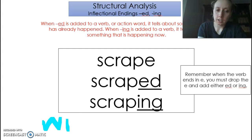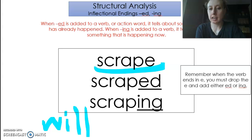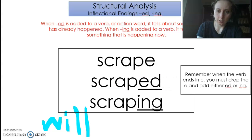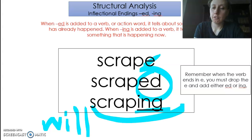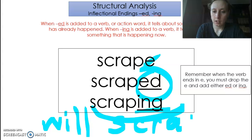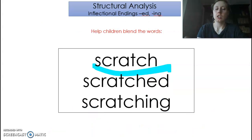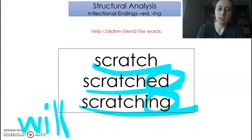Now I'm going to add one more: 'will.' Will means it's happening in the future. So we have 'scrape.' Scrape becomes, in the past, 'scraped' — ED. Now we cross off the E and add ING: scrape becomes 'scraping,' happening right now. And in the future: 'will scrape.' I hope you will not scrape your knee when you go outside. Here's the next one: scratch. In the past, add ED: 'scratched.' If it's happening now: 'scratching.' And in the future: 'will scratch.'